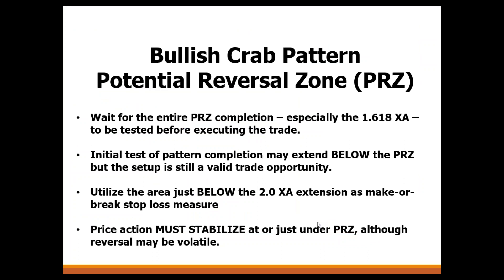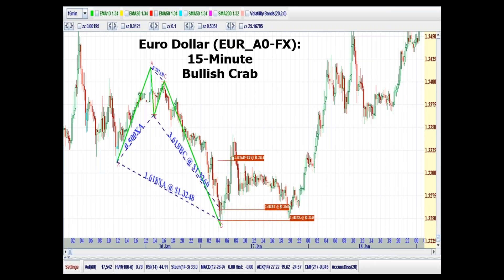For the bullish crab PRZ, it's really critical to wait for the entire test of the zone. We're usually looking for that completion to extend beyond the 1.618. In this case, we use the 2.0 XA extension as the make-or-break stop loss, and then we look for stabilization at or just past the PRZ.